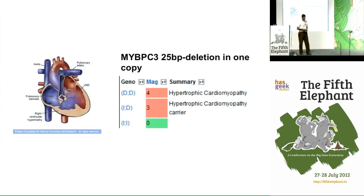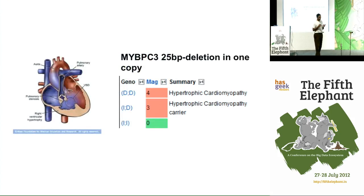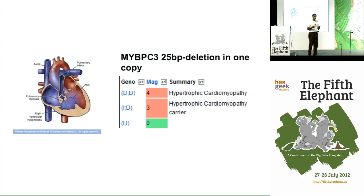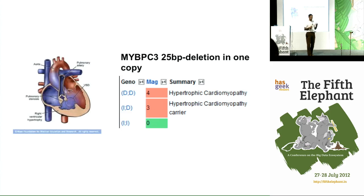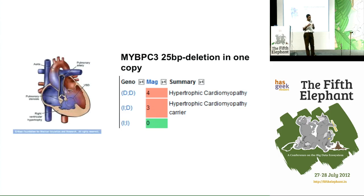One example of what you can do with that information: all of us are carriers for various diseases. Luckily those diseases don't manifest because each of us has two copies of the program — one from each parent. We have one copy with bad genes and one good copy, and one good copy is enough to protect us. But when there are two bad copies, the disease manifests. If two carriers have a child, there is a good chance the offspring will have two bad copies.